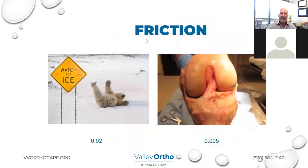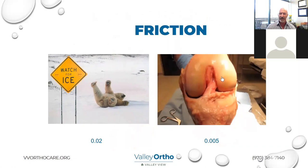A very important thing to understand is that this smooth cartilage — the hyaline cartilage on the femur and tibia — is very efficient as a bearing surface. If you take, for example, ice on ice, this number represents what we call the coefficient of friction, and this number is the coefficient of friction of cartilage on cartilage. So it's four times more efficient as a bearing surface than ice on ice.